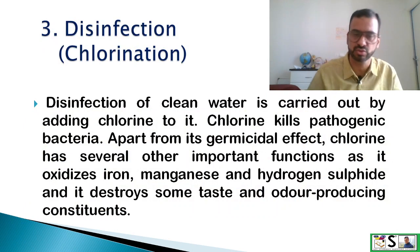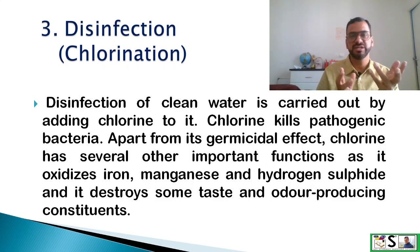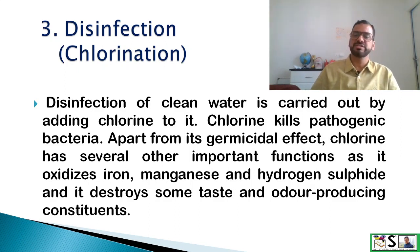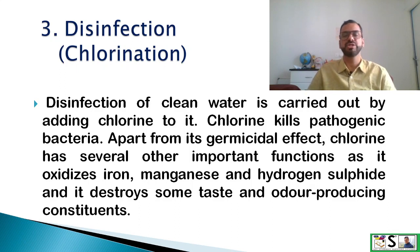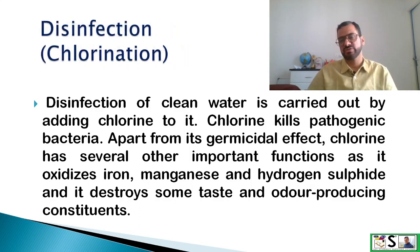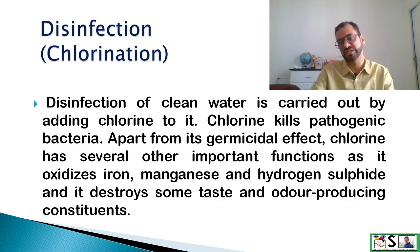The third step after storage and filtration is disinfection. It can take place at two levels: pre-filtration chlorination (pre-chlorination) and post-chlorination where facilities are available, or at one stage otherwise. Disinfection is carried out by adding chlorine because chlorine is a bactericide that kills pathogenic bacteria. Chlorine also oxidizes iron, manganese, and hydrogen sulfide, and destroys some taste and odor-producing constituents.